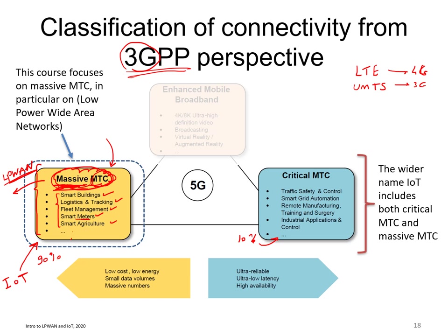Critical MTC refers to things that still qualify as IoT but require much more stringent communication requirements — such as very low latency. For example, an autonomous car communicating with infrastructure must have a delay of less than five milliseconds. This is called critical MTC, and it is very different from a water meter reporting water level every hour. These applications require very fast and very reliable communication.